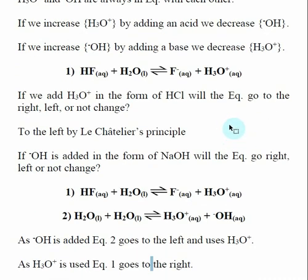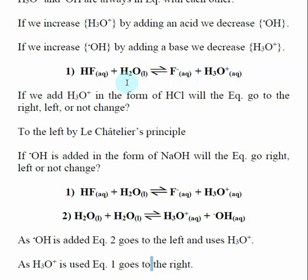What we want to look at is what's going to happen to an equilibrium — say a Ka or Kb — when we add in additional hydronium or additional hydroxide. Here we have a Ka expression for hydrofluoric acid. If we add in additional hydronium in the form of a strong acid like HCl, by Le Chatelier's principle the equilibrium will shift to the left, and the concentration of F⁻ will decrease.